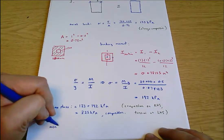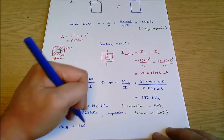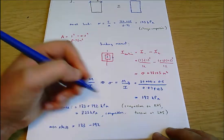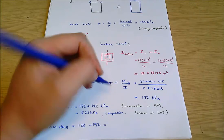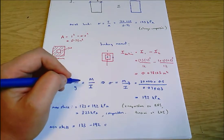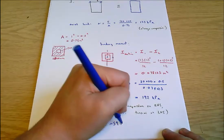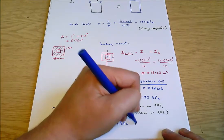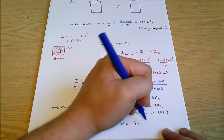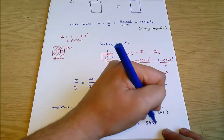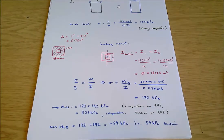And then we can also say the minimum stress equals 133 minus the 192 this time. That one's the 133 is compression, so they act against each other, which comes out as negative 59 kPa, which is - the negative means if the positive is compression, negative is tension - so it's 59 kilopascals tension. And I'll just mark up that those are my final answers.